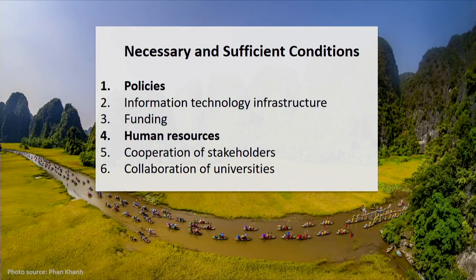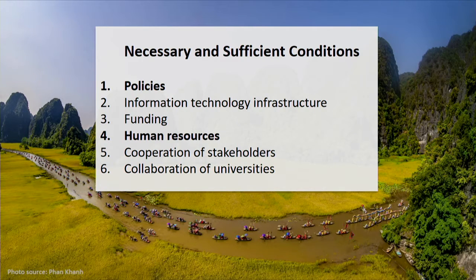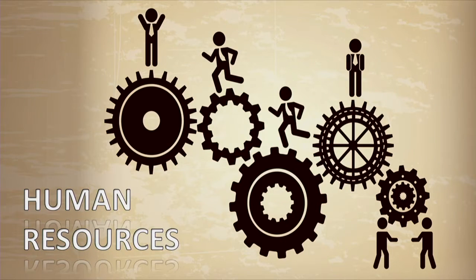The data reveals six main conditions: policy, information technology infrastructure, funding, human resources, cooperation of stakeholders, and collaboration among universities. Among these, policy and human resources are the critical conditions. There are five main stakeholder groups involved in developing institutional OER initiatives in Vietnam: policy makers, OER project implementers, users, OER content creators, and facilitators.